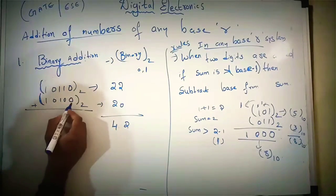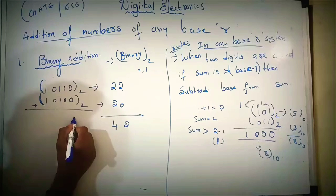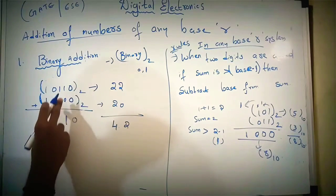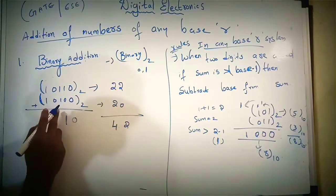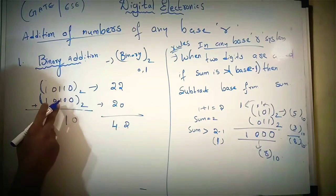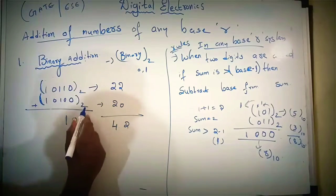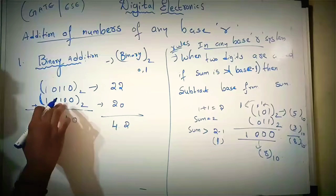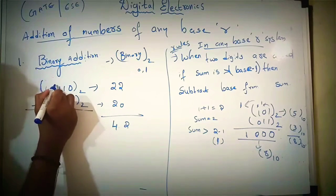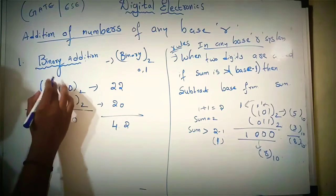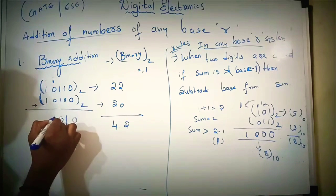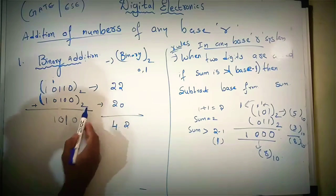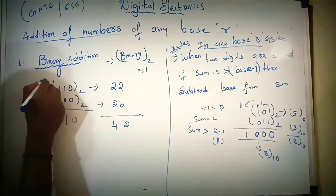Now let us perform the binary addition: 0 plus 0 is 0, 0 plus 0 is 0, 1 plus 0 is 1, 1 plus 1 is 2. Here the sum is greater than base minus 1, so subtract base from sum: 2 minus 2 is 0. Here we will get carry as 1. 1 plus 0 is 1, 1 plus 0 is 1, 1 plus 0 is 1. Carry will be 0. 1 plus 1 is 2, and 2 minus 2 is 0, we get carry as 1.